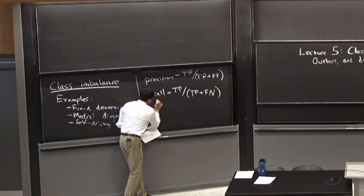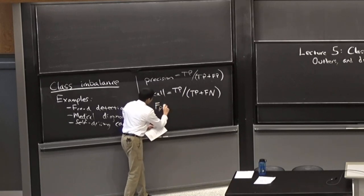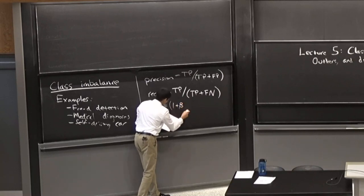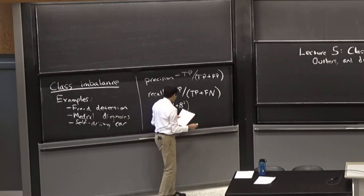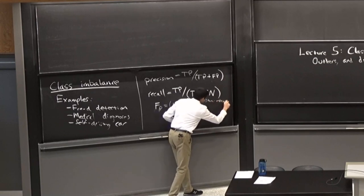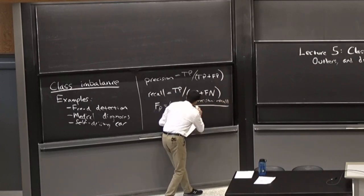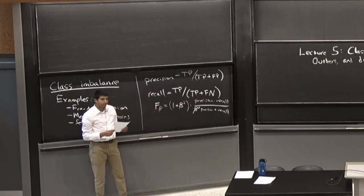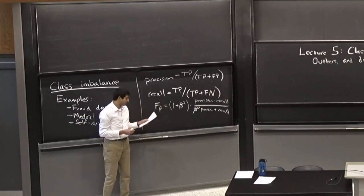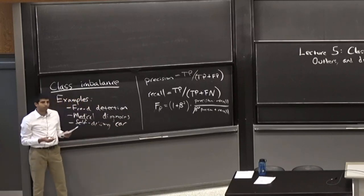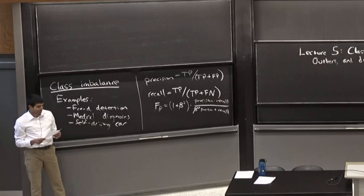When dealing with imbalanced classes, a related metric is the F-beta score, parametrized by beta, which allows you to control the trade-off between precision and recall. When beta equals one, this reduces to the F1 score.